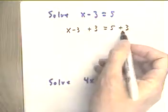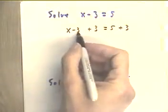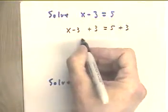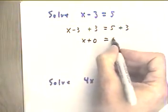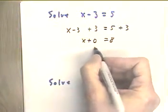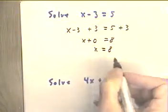We can add 3 to both sides of this equation so that the negative 3 and the plus 3 give us 0. We get x plus 0 equals 8 and by the zero property x equals 8.